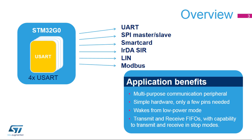The USART is a very flexible serial interface that supports asynchronous UART communication. It also provides certain features that are useful when implementing Modbus communications. Applications making use of the USART benefit from the easy and inexpensive connection between devices, which only requires a few pins. In addition, the USART peripheral is functional in low power modes. It comes with transmit and receive FIFOs and can transmit and receive in stop modes.